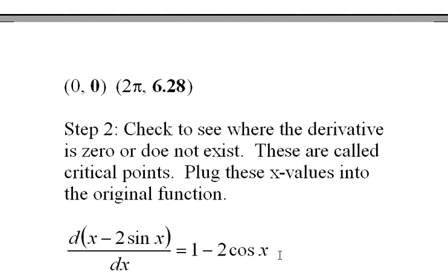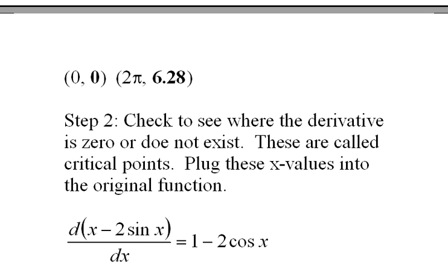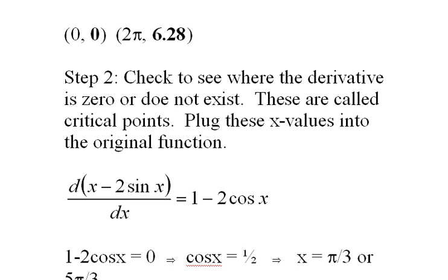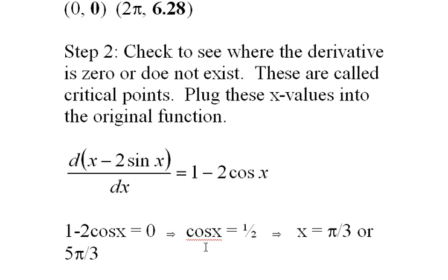We'll take the derivative of x - 2sin(x) and we get 1 - 2cos(x). This is defined everywhere. There's no x that would make this derivative undefined. So what we have to do is set it to 0. We do that, we get cos(x) = 1/2.